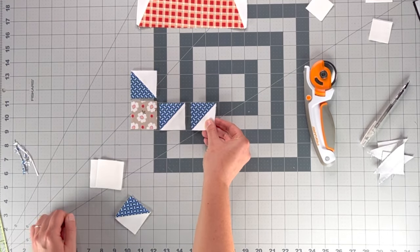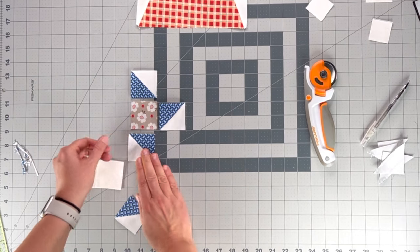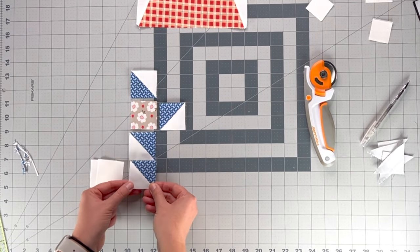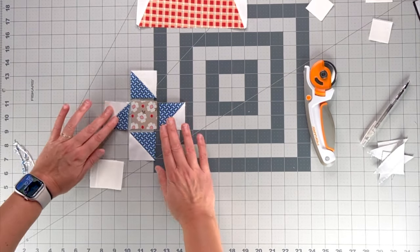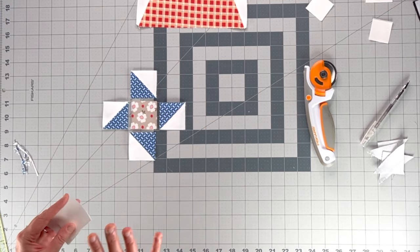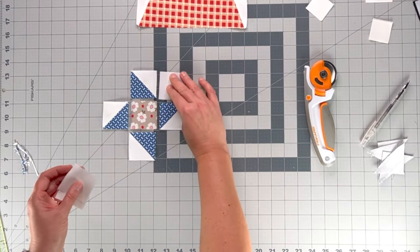So what I usually do is I take the first half square triangle and line it out with the pattern. And then I take the second half square triangle and I turn it 90 degrees. That's the same as that, I turn it 90 degrees. That is the same as that, and I turn it 90 degrees. And then I know my friendship star points are all turned the correct way.